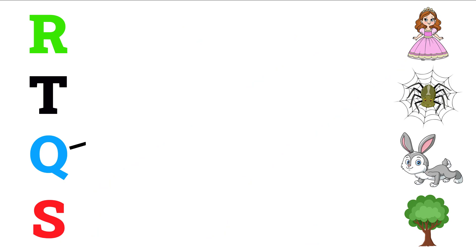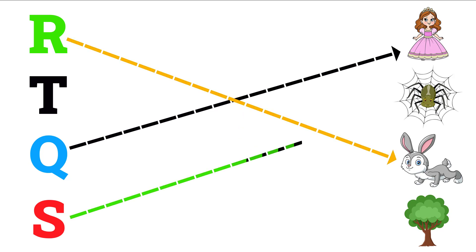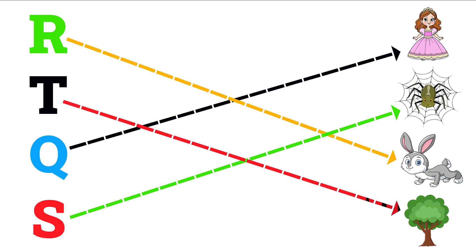Q for queen, R for rabbit, S for spider, T for tree.